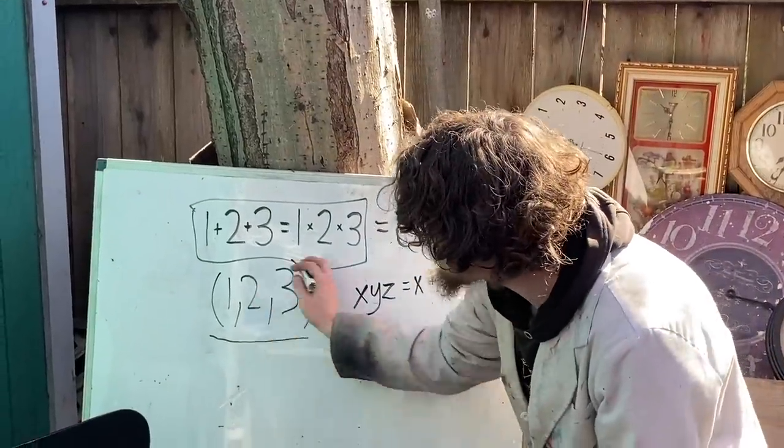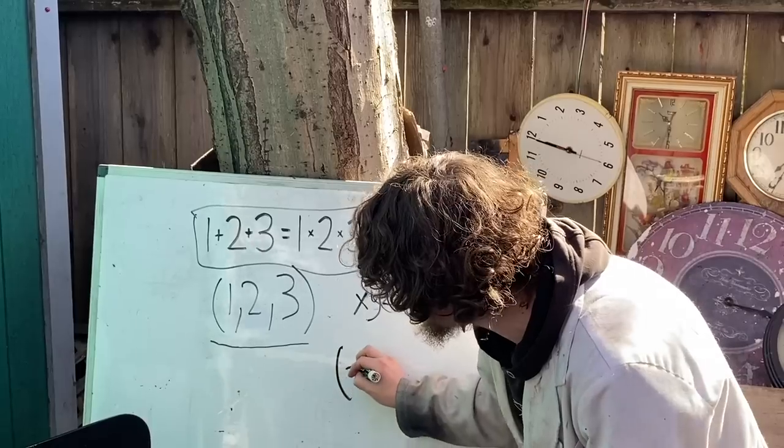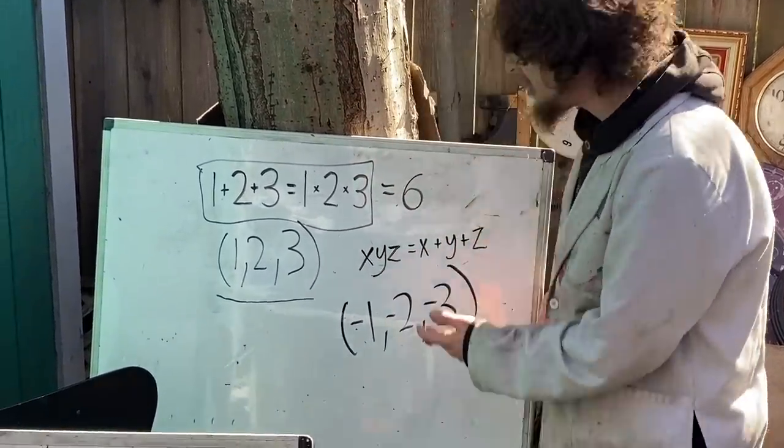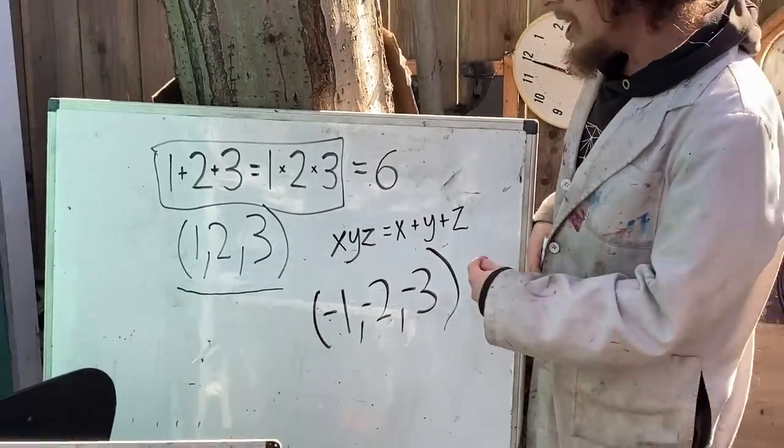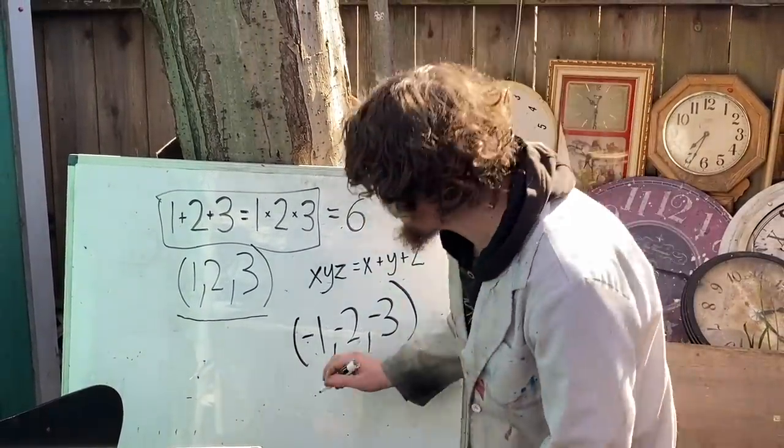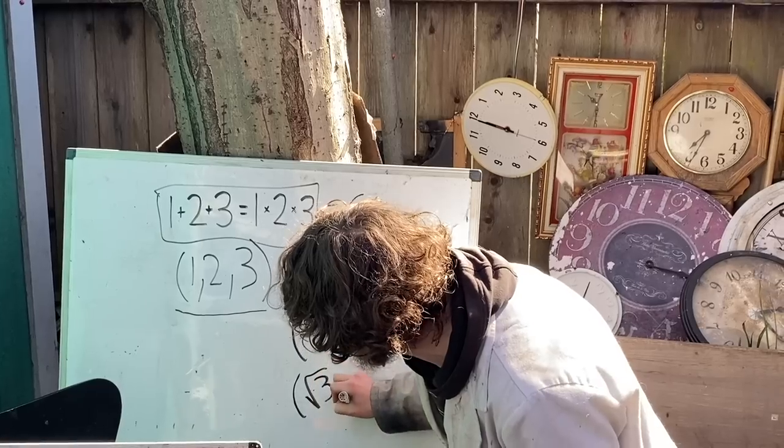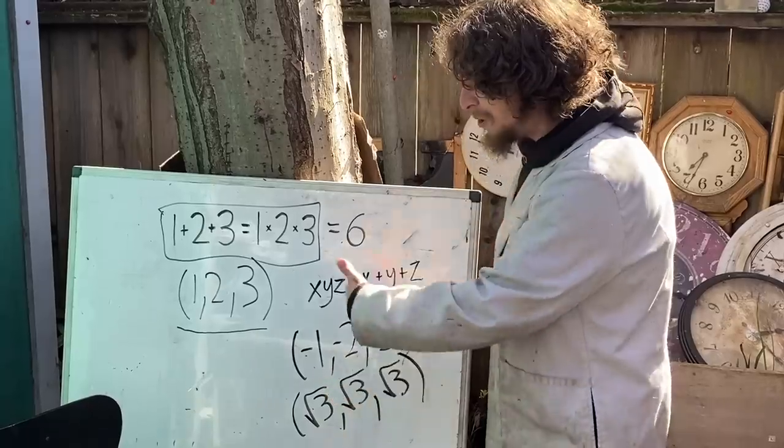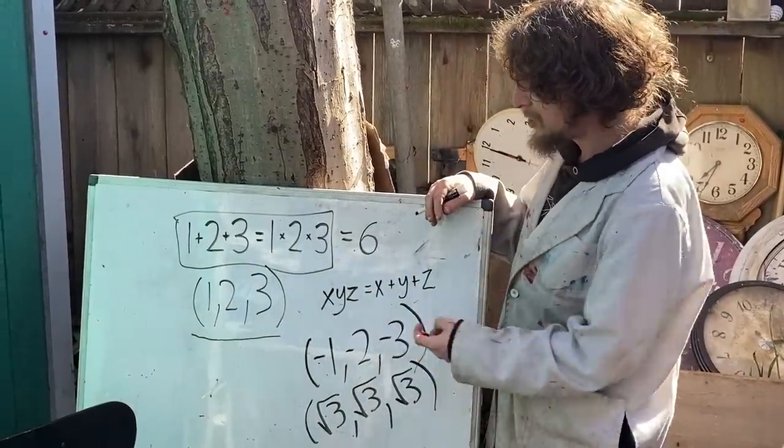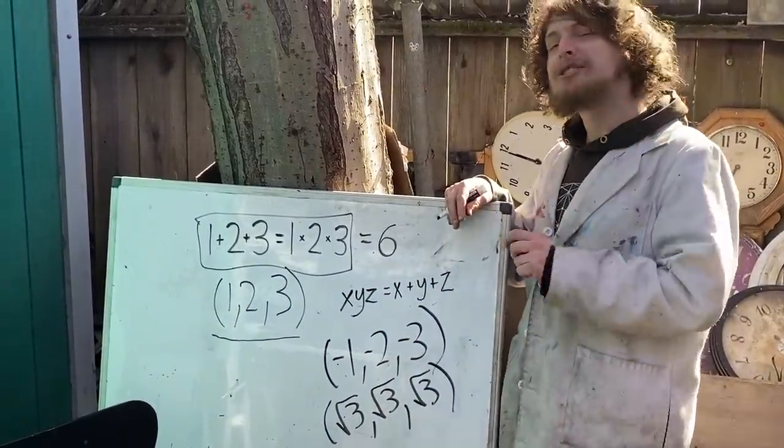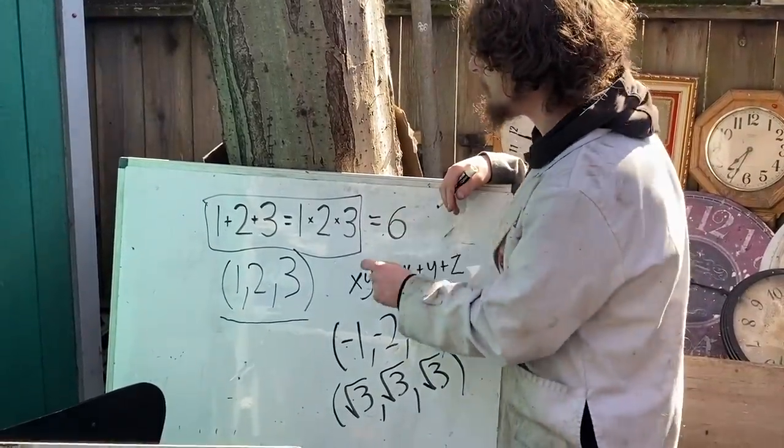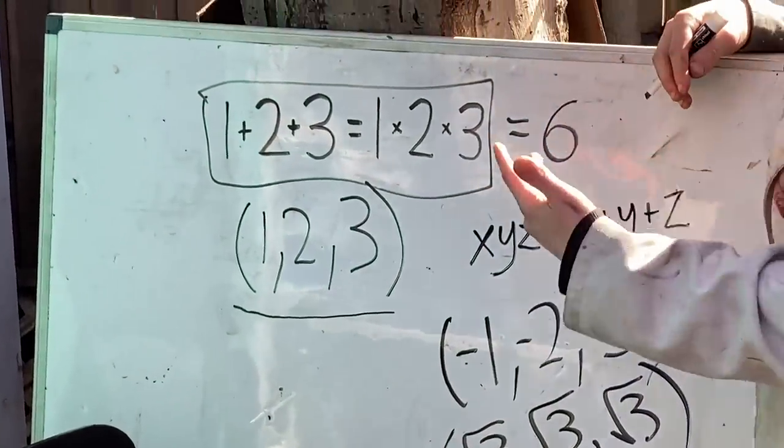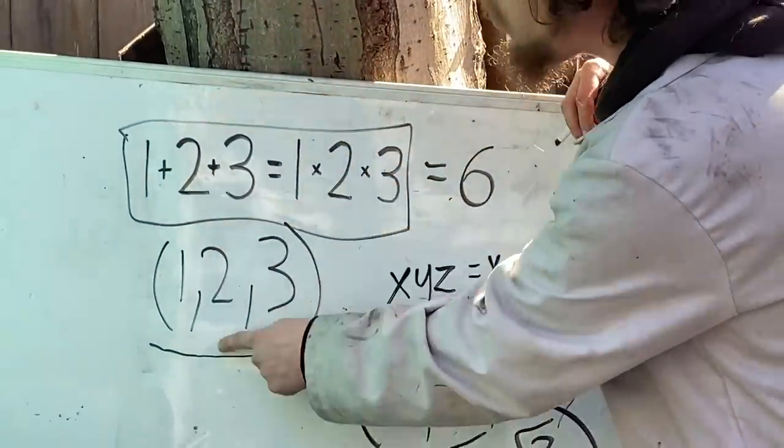Like for example, one that works, that's sort of a flip of that, is negative 1, negative 2, negative 3. Because the sum or product of those is negative 6. And another that works is square root of 3, square root of 3, and square root of 3. Because those add or multiply to 3 times the square root of 3. But if I restricted myself to only looking for solutions where all three of the numbers were positive integers, this would be the only solution.